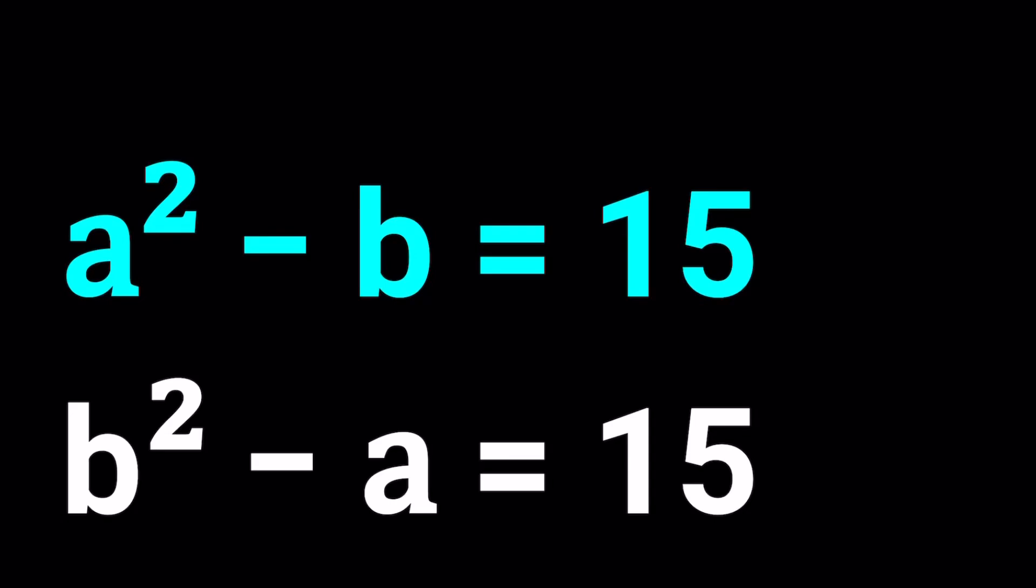Hello everyone. In this video, we're going to be solving a system of equations. We have a squared minus b equals 15 and b squared minus a equals 15. And we're going to be solving for a and b values.